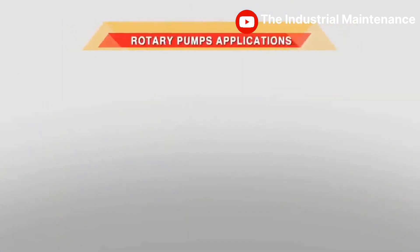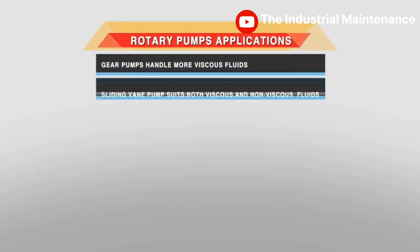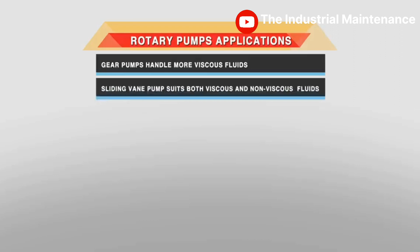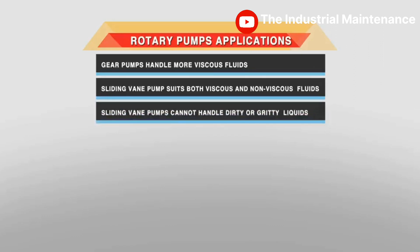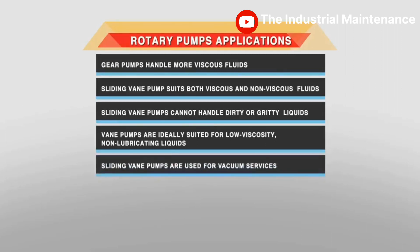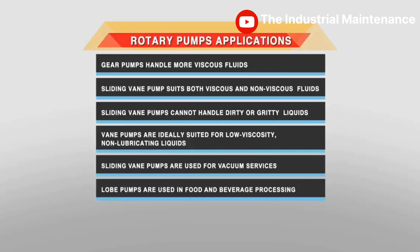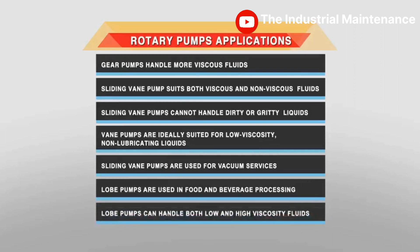Regarding applications of rotary pumps: gear pumps handle more viscous fluids. The sliding vane pump suits both viscous and non-viscous fluids, but cannot handle dirty or gritty liquids. Vane pumps are ideally suited for low viscosity, non-lubricating liquids and are used for vacuum services. Lobe pumps are used for food and beverage processing and can handle both low and high viscosity fluids.